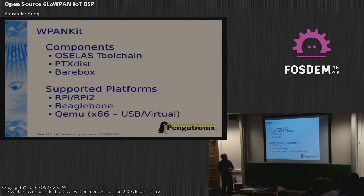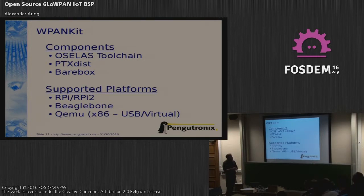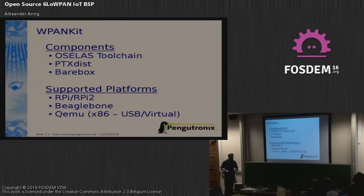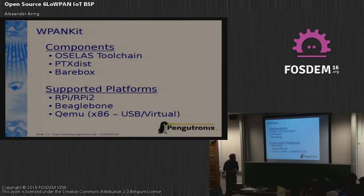The WPan Kit uses some components like the Buildroot toolchain and PTXdist. PTXdist is a build system tool which does a lot of cross-compiling for you. It also offers interfaces for autotools or CMake to set the right environment variables to cross-compile your stuff for the WPan Pi, for example.